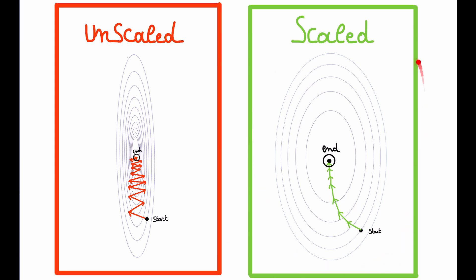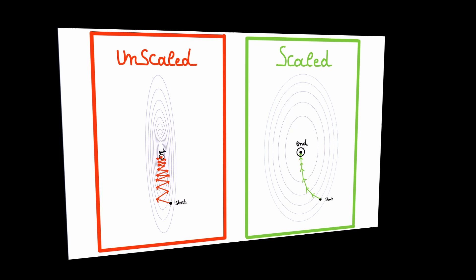In this part we will look at the concept of feature scaling. This will allow us to speed up gradient descent as illustrated in these two drawings, also called contour plots.